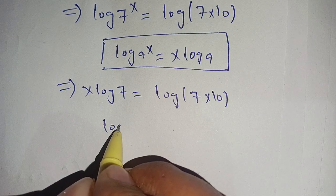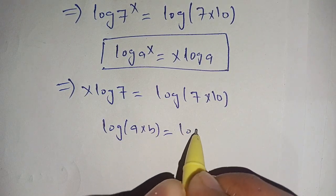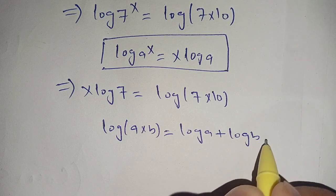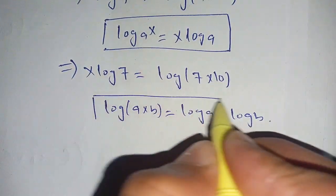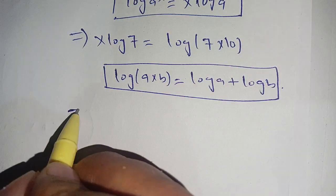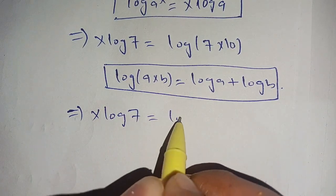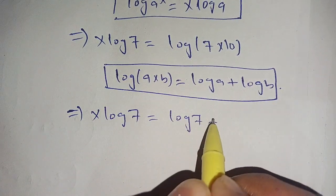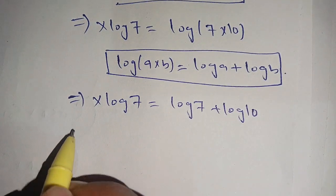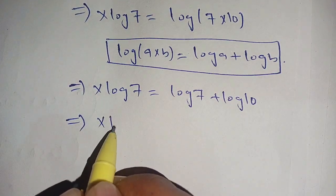We know that log of a times b is equal to log of a plus log of b. Using this identity on the right-hand side, we get x log of 7 is equal to log of 7 plus log of 10.